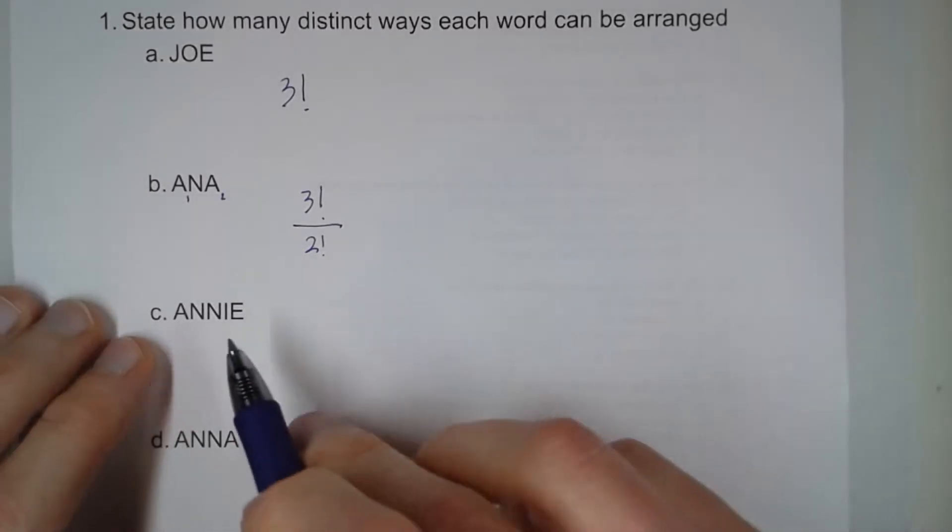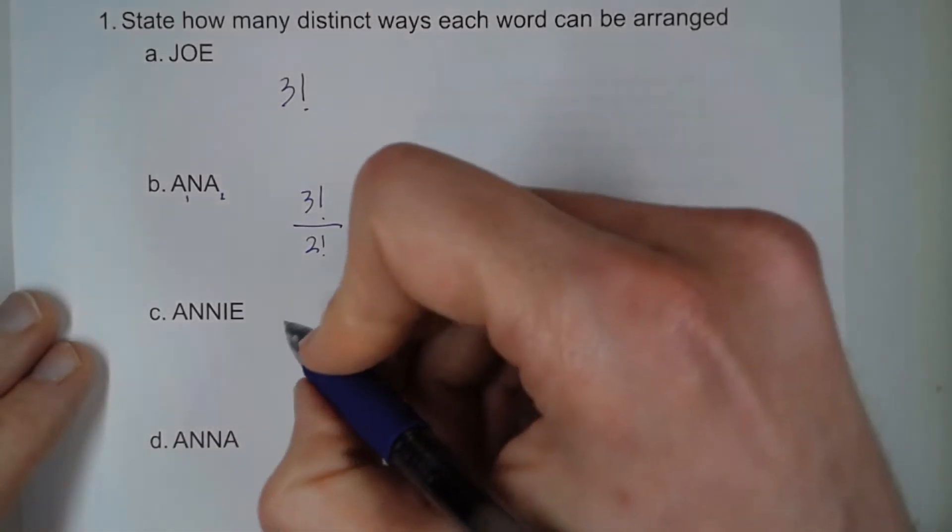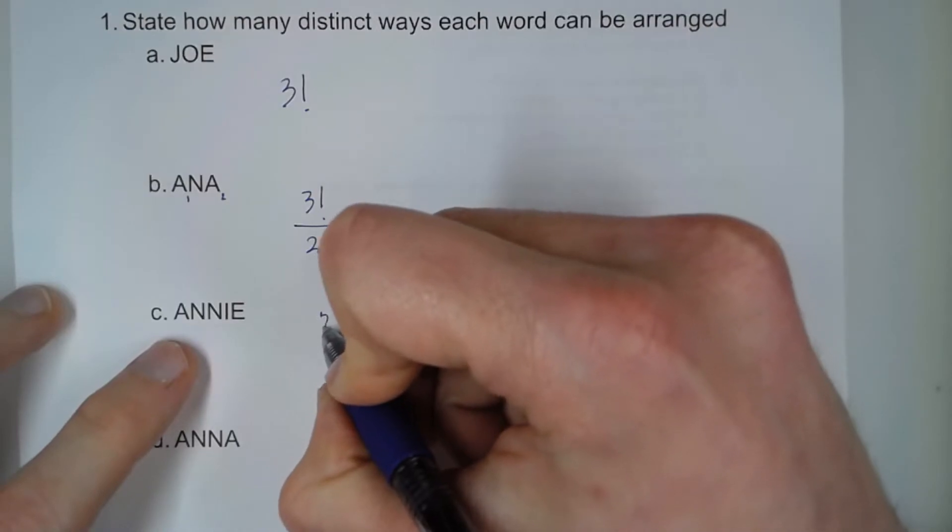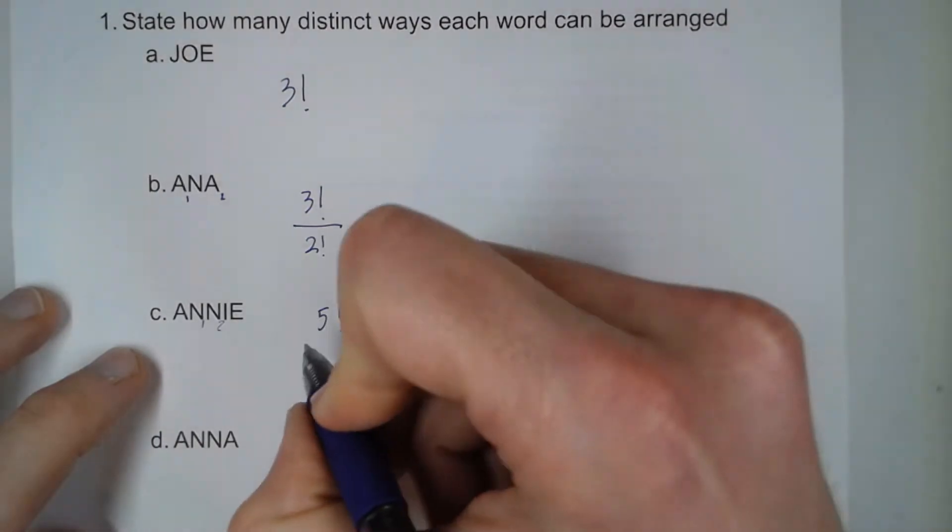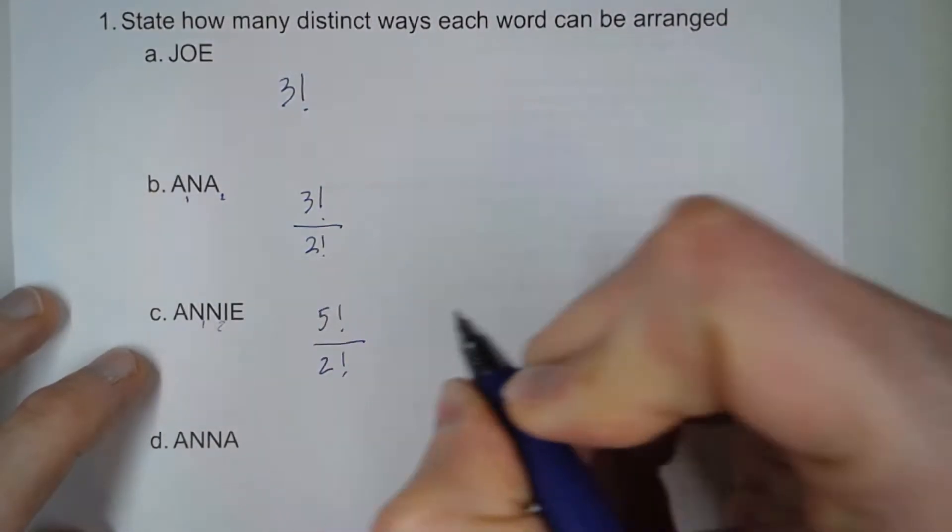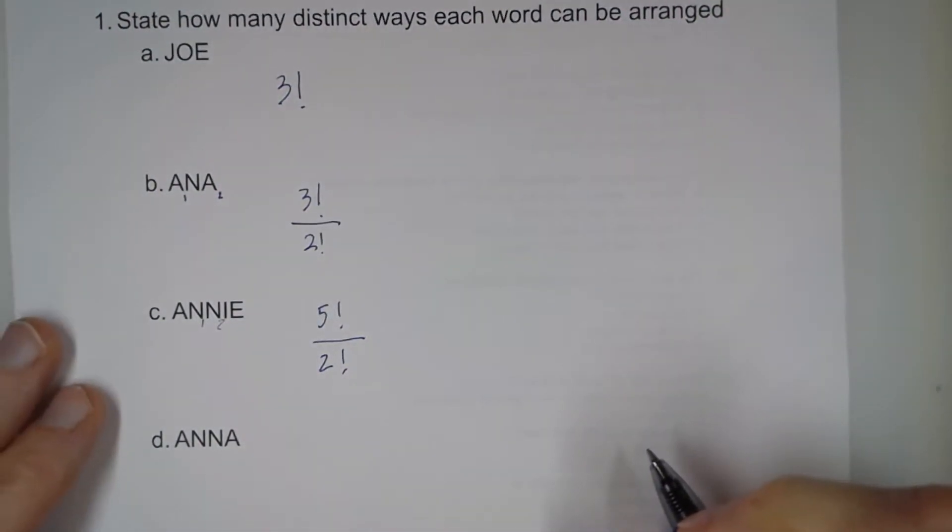So with letter C, I have the word Annie, and so here we have five letters, and we have two N's. So we're going to divide by two factorial for that one.